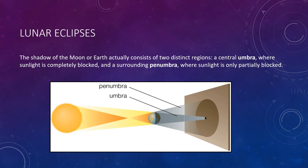Let's go into more detail about lunar eclipses. The shadow of the moon or Earth actually consists of two distinct regions: a central region called the umbra, where sunlight is completely blocked; and a surrounding region known as the penumbra, where sunlight is only partially blocked. Just know that there's an umbra — the darkest region where sunlight is completely blocked — and the penumbra, where you still get some darkening but not total darkness.